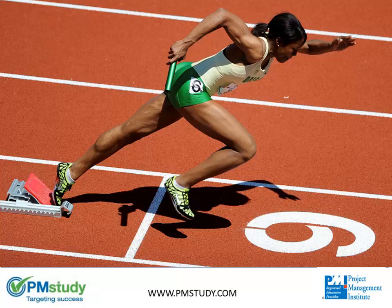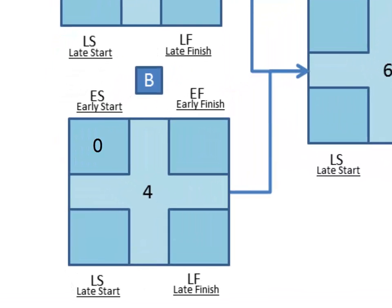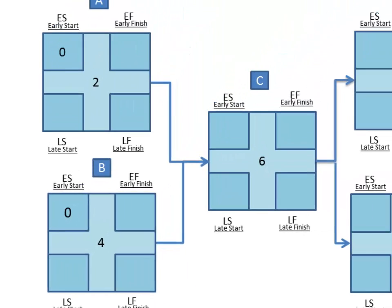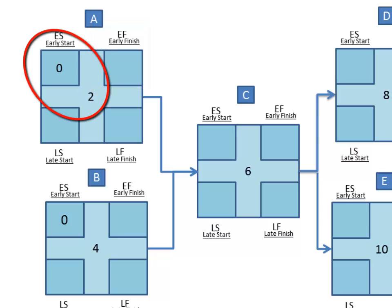Think of it like the start of a race. At the very moment that the starting gun goes off, no duration of the race has passed. So placing a zero to designate the start of project execution is accurate. The same holds true for Task B, as it also starts the project. Now for Task A, we need to determine the earliest time the task can finish. To do this, let's add the early start to the duration of the task.